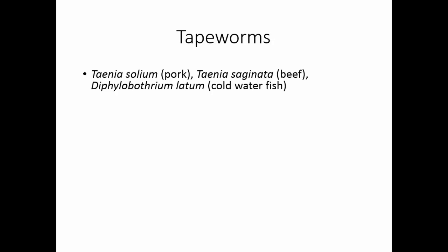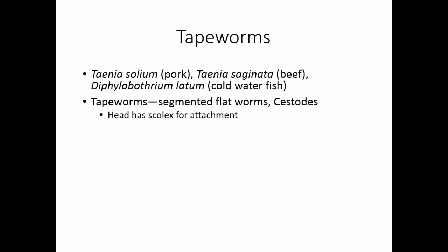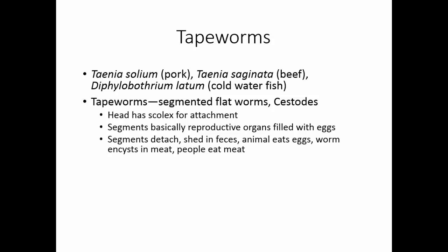There are three tapeworms associated with digestive system diseases: Taenia solium from raw or improperly cooked pork, Taenia saginata from beef, and Diphyllobothrium latum from cold water fish. Tapeworms are flat segmented worms called cestodes. They have a head with a scolex bearing suckers or hooks for attachment to the intestine. Each segment contains reproductive organs, and as segments move away from the scolex they become filled with eggs. The segments detach and are shed in feces; the appropriate animal eats the eggs, the worms hatch and encyst in the meat, and then people eat the meat. Proper cooking and freezing both destroy the larvae.